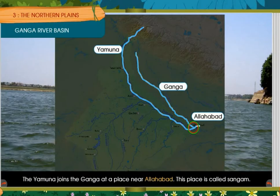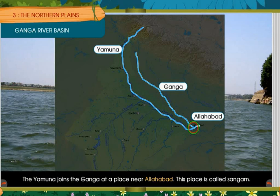The Yamuna joins the Ganga near Allahabad. This place is called Sangam, where the Yamuna and Ganga meet. The Ganga then flows through the states of Uttaranchal, Uttar Pradesh, Bihar and West Bengal.